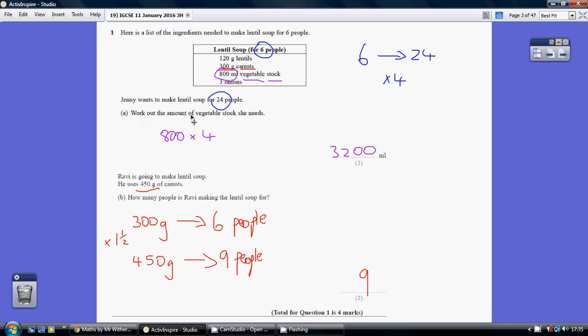We're told to work out the amount of vegetable stock, so we have to take our 800 and multiply that by 4, giving us 3,200.